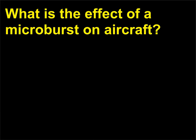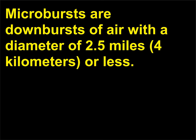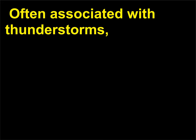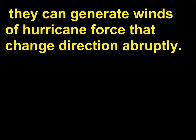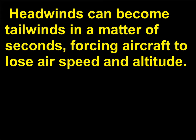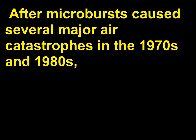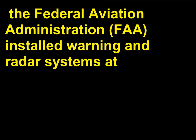What is the effect of a microburst on aircraft? Microbursts are downbursts of air with a diameter of 2.5 miles (4 kilometers) or less, often associated with thunderstorms. They can generate winds of hurricane force that change direction abruptly — headwinds can become tailwinds in seconds, forcing aircraft to lose airspeed and altitude. After microbursts caused several major air catastrophes in the 1970s and 1980s, the FAA installed warning and radar systems at airports to alert pilots when conditions were right for wind shears and microbursts.